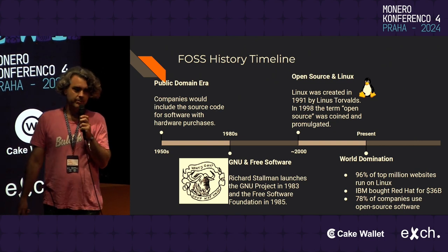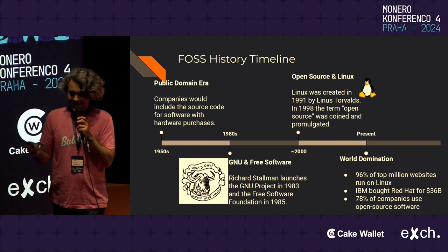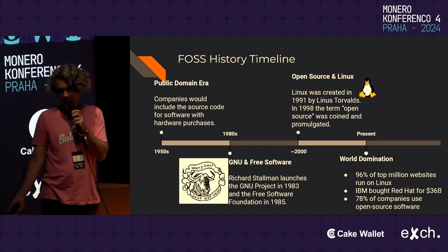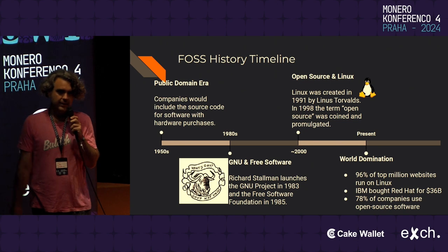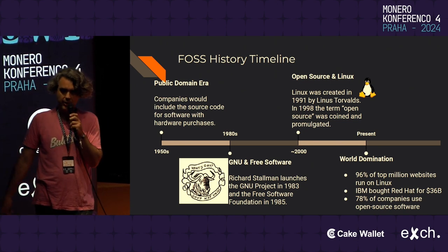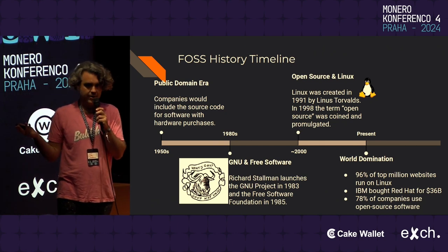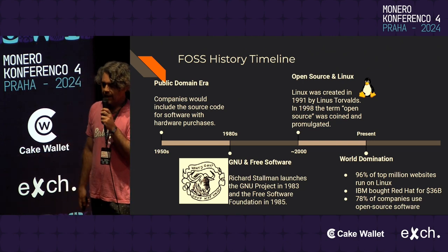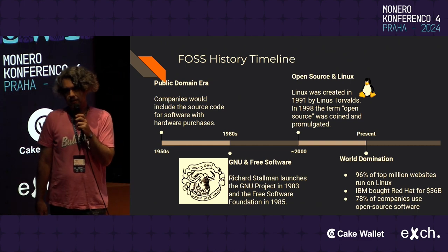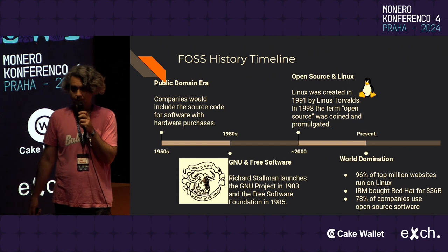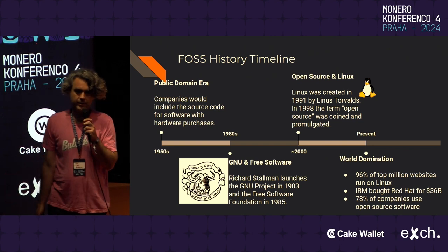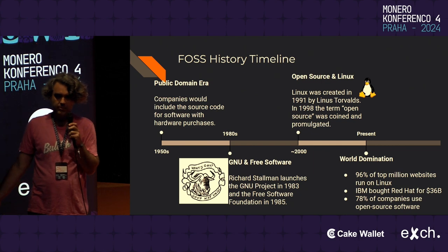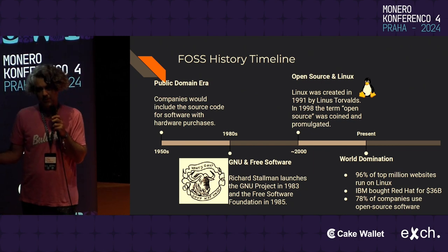There are kind of four periods to go over. First, the public domain era where you got all the software with your computer and were free to tinker. Then from about 1980 to 1990, the Stallman era where the term 'free software' came into use. Then between 1990 and 2000, the birth of Linux and several big battles with the government and Microsoft, as well as the coining of the term 'open source.' From about 2000 on, people started to use the term FOSS, and now the entire internet runs on open-source software.